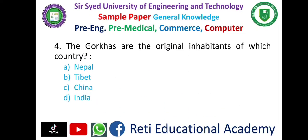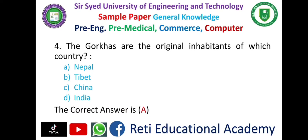Question number 4: The Gurkhas are the original inhabitants of which country? — A. Nepal, B. Tibet, C. China, D. India. The correct answer is A: Nepal.